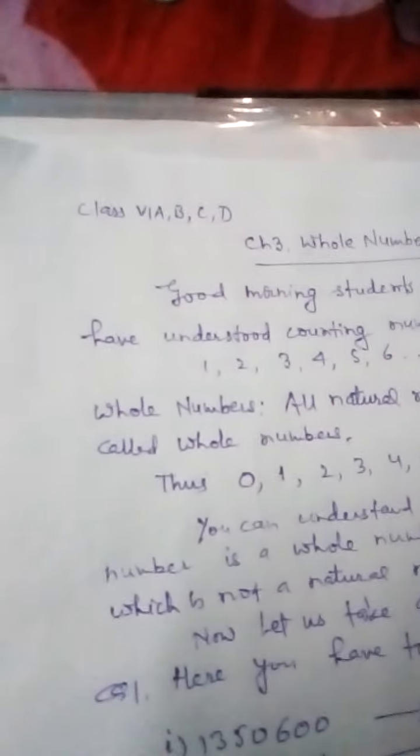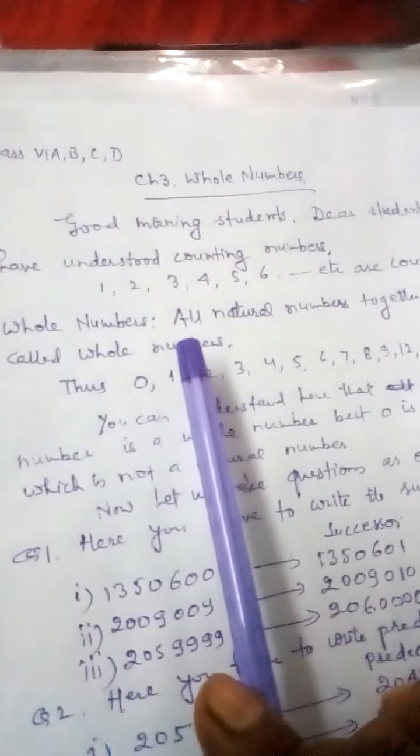You have understood that natural numbers like 1, 2, 3, 4, 5, 6, all this type of numbers are called natural numbers.